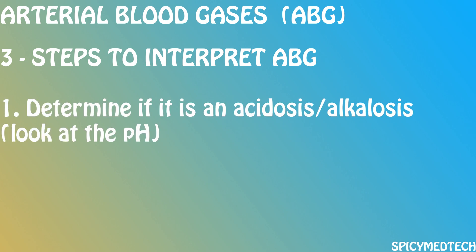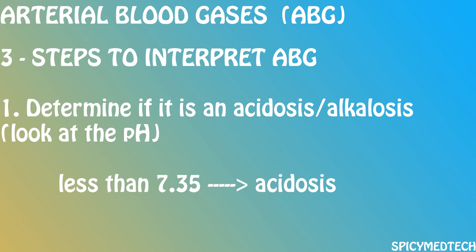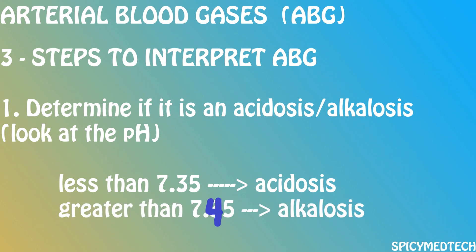Step 1: Determine if it is an acidosis or an alkalosis. An acidosis means the pH is below 7.35, and an alkalosis means a pH above 7.45. For this step, all we have to do is look at the pH. In ABG problems, the pH would only be normal if it is fully compensated or if the patient is absolutely healthy.